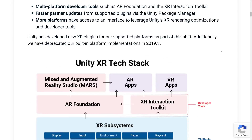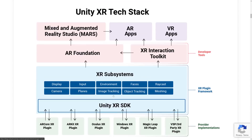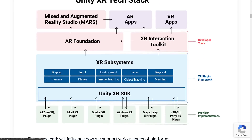Instead of supporting a ton of different technology stacks, they've created this XR layer — the Unity XR SDK — with a series of plugins for existing products. Currently available plugins include the ARCore XR plugin, the ARKit XR plugin (Google and Apple's AR), the Oculus XR plugin, the Windows XR plugin covering Oculus Rift devices and Windows Mixed Reality and HoloLens, the Magic Leap XR plugin, and various third-party XR plugins.